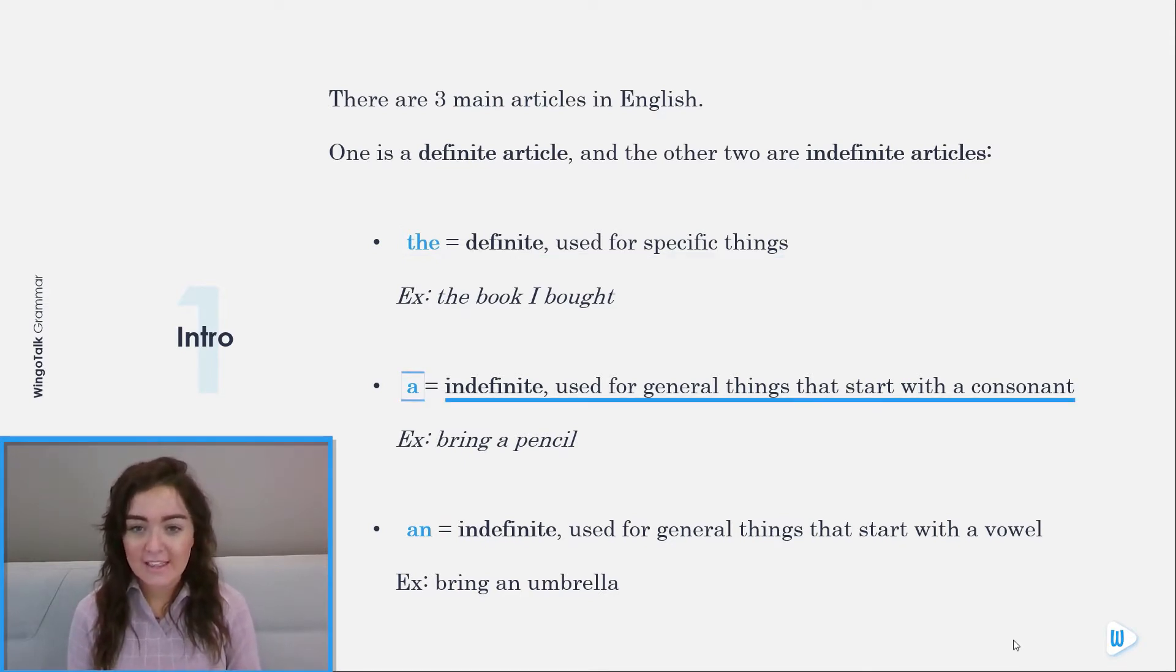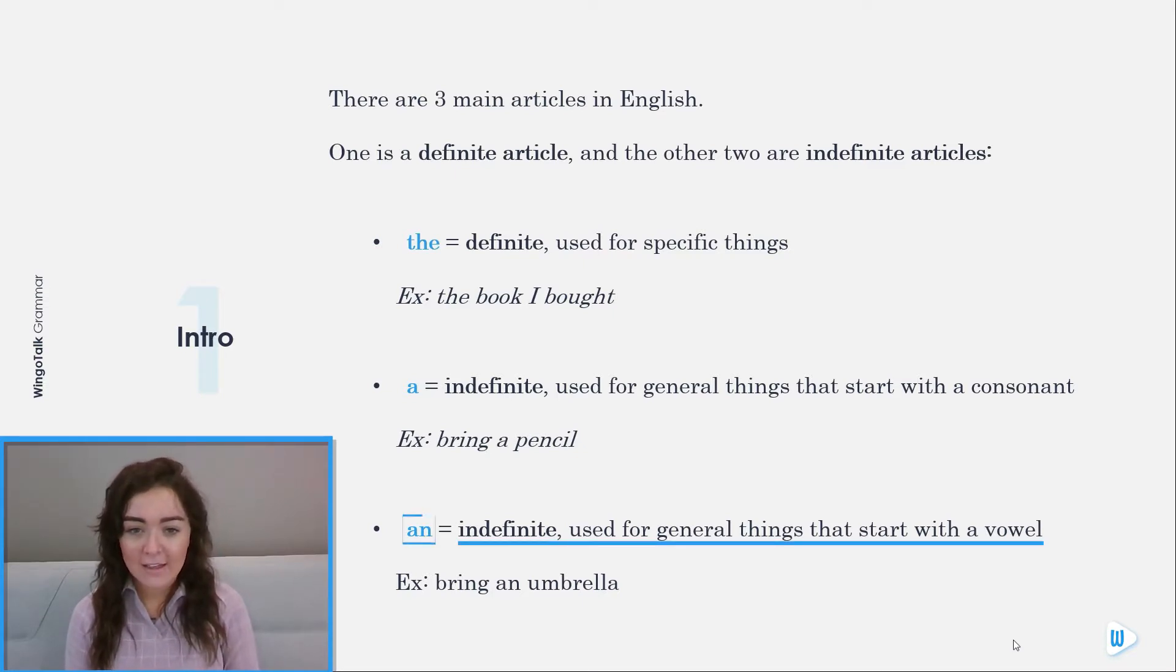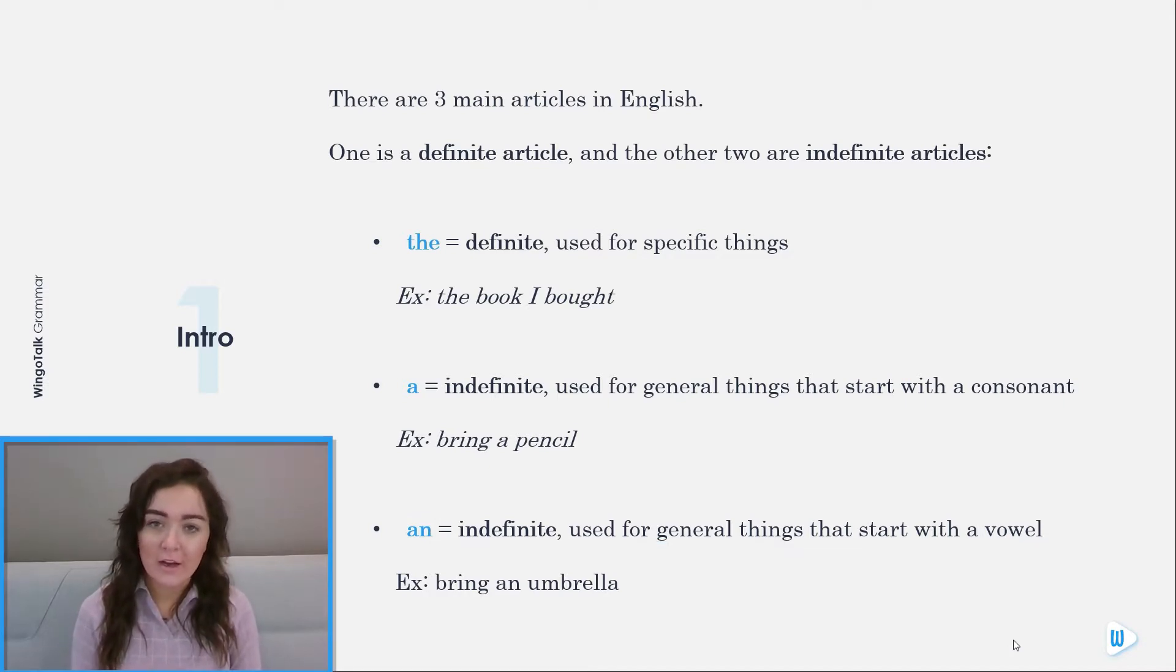A is indefinite and it's used for general things that start with a consonant. For example, bring a pencil. An is also indefinite and used for general things that start with a vowel. For example, bring an umbrella.